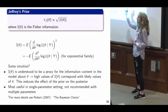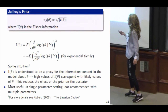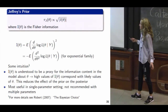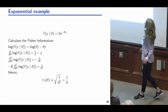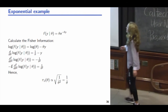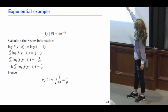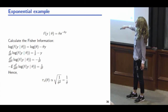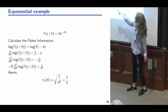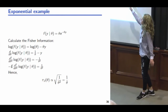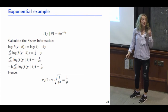Jeffrey's prior is most useful in single-parameter settings — when you have multiple parameters, the multi-dimensional version is not recommended. For the exponential distribution, working through the calculations of the Fisher information, we get a particular Jeffrey's prior. It's a recipe for finding the Jeffrey's prior in the one-parameter setting, and you can look through those calculations later.